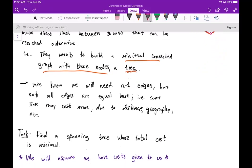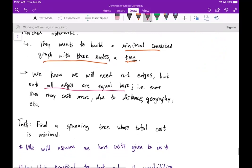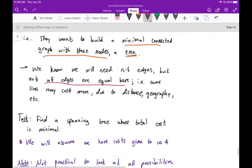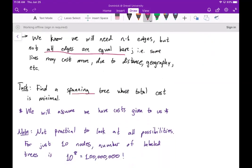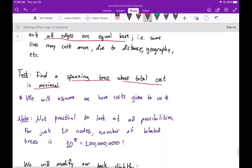But we're going to assume here that not all edges are equal. Some lines may cost more due to their distance or geography and other factors. The idea is we want to find a spanning tree whose total cost is minimal, and of course we'll assume that we have costs given to us.